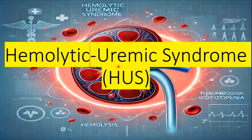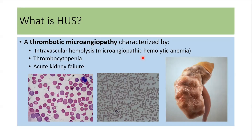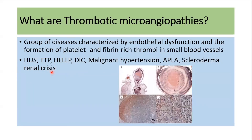Today, in this video, we'll discuss about hemolytic uremic syndrome. HUS is a thrombotic microangiopathy characterized by intravascular hemolysis, thrombocytopenia, and acute renal failure.